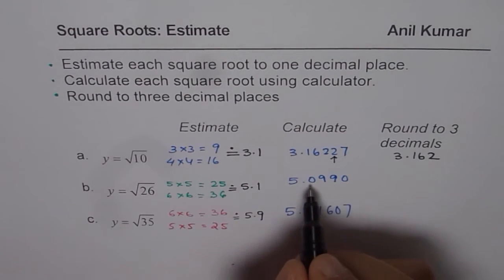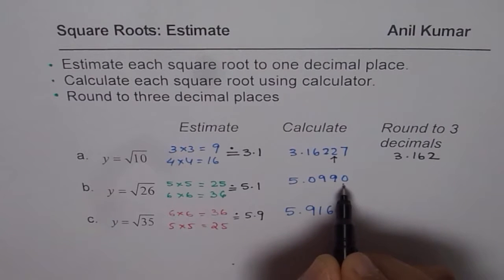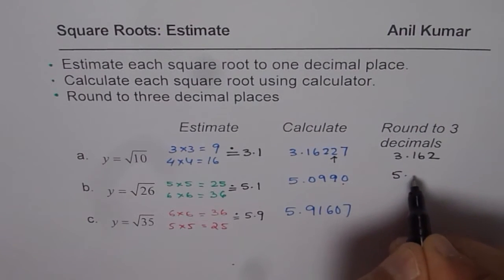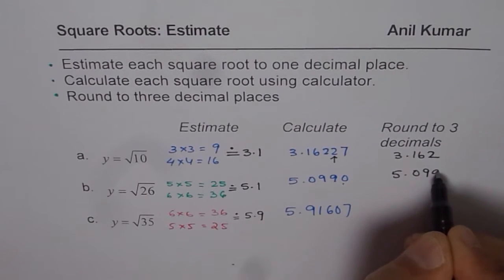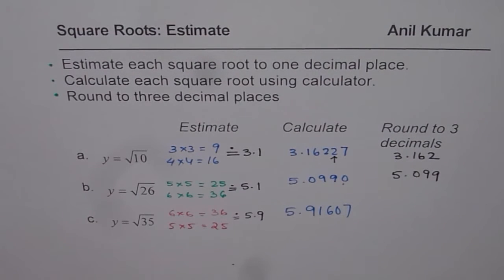For 5.0990, the fourth decimal is less than 5, so we leave it at 9. Our answer is 5.099 for square root of 26.